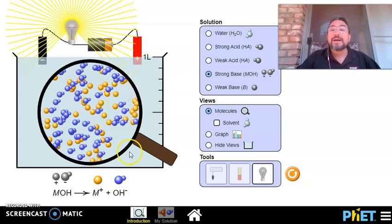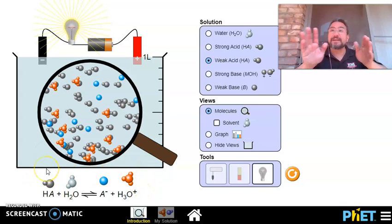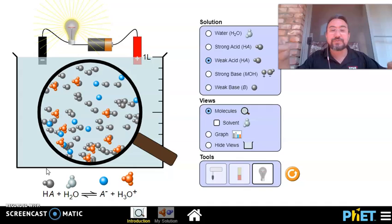What would happen if I have a weak acid? Notice there's less light going through. The electricity doesn't flow as well and that's because only some of the weak acid actually ionizes, divides into the two ions.